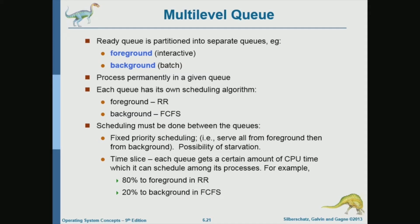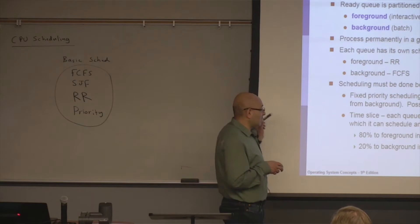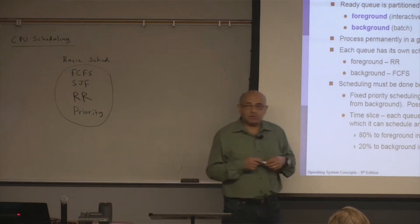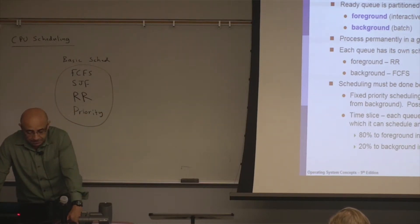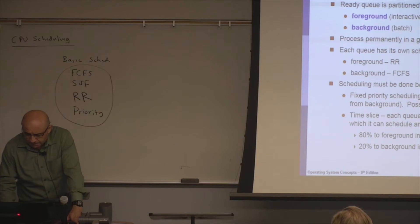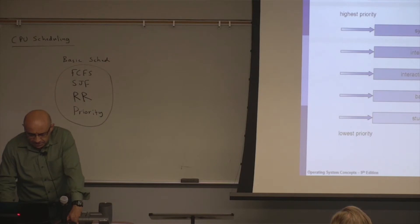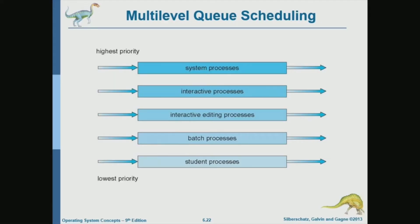One solution, assuming we do not change priorities, is to divide the CPU time between foreground and background processes — for example, give 80 percent of the CPU time to foreground processes and 20 percent to background processes.